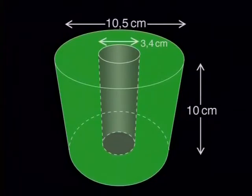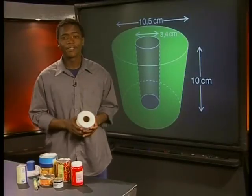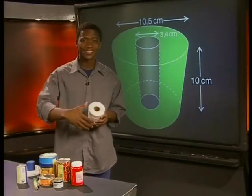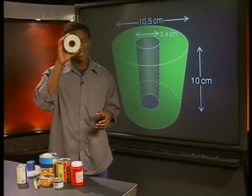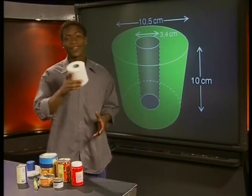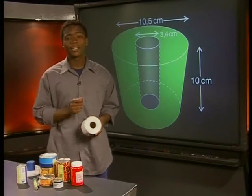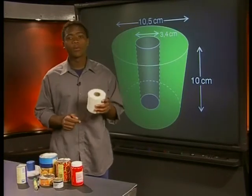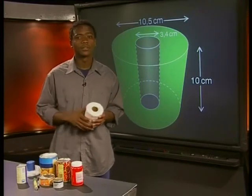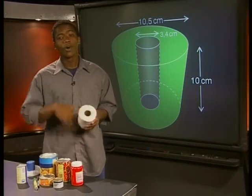What would you do to solve this problem? Will it help to find the volume of the whole roll? Then what do we do about the empty hole inside the roll? Not a problem — we can subtract the volume of the hole from the volume of the whole toilet roll. So let's find the volume of the whole toilet roll. To do that, we'll use the formula for the volume of the cylinder.